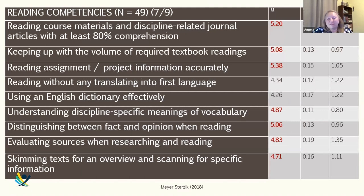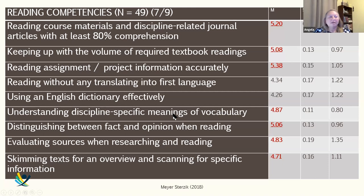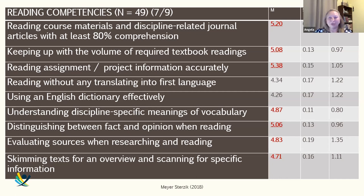The needs analysis study included 51 professors across colleges and universities in several fields, examining all skills. For reading, using a Likert scale out of 6, a score of 4.5 or higher was deemed very important for academic success as defined by the professors. Reading competencies identified as important include reading academic journal articles, understanding assignments, vocabulary, distinguishing fact from opinion — all text-based skills. Professors wanted students to understand academic articles and be able to skim and scan.